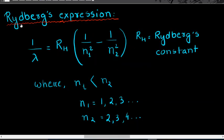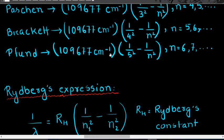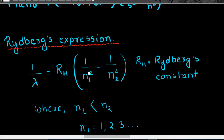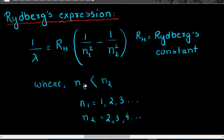A scientist named Rydberg gave a common expression for all those lines. He stated that whatever the lines of the hydrogen spectra, the wave number can be expressed as R_H × (1/n₁² − 1/n₂²), where R_H is the Rydberg constant, equal to 109,677 cm⁻¹. Here n₁ is less than n₂; n₁ can take values of 1, 2, 3, and so on, and n₂ can take values of 2, 3, 4, and so on.